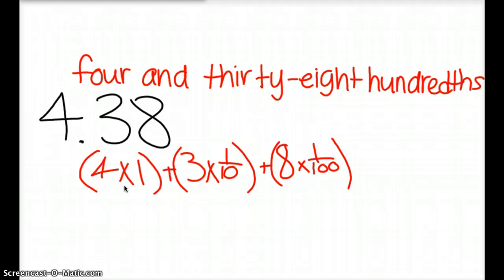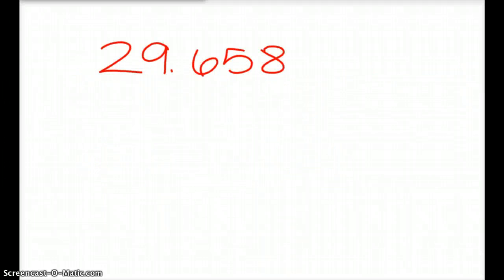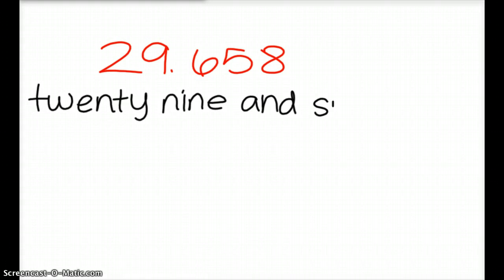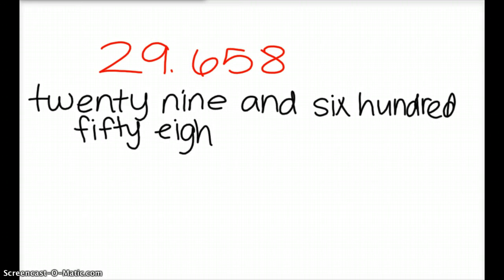All right, let's look at another one, so you can erase your whiteboards. Okay. And here we have a number. It says two-nine-point-six-five-eight. Who can read it to us? Read us the number, Cole. Twenty-nine and six-hundred-fifty-eight thousandths. Very good. Twenty-nine and six-hundred-fifty-eight thousandths. So if I was writing that in words, I would say twenty-nine and six-hundred-fifty-eight thousandths. What I want you to do now on your whiteboards is to expand that number.